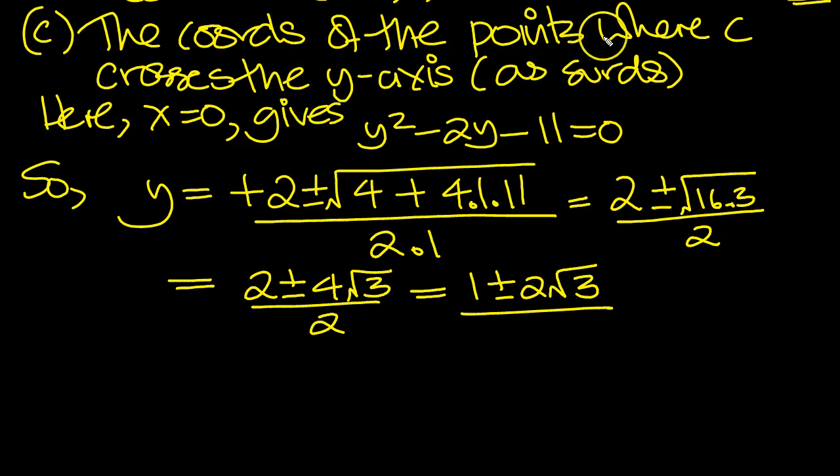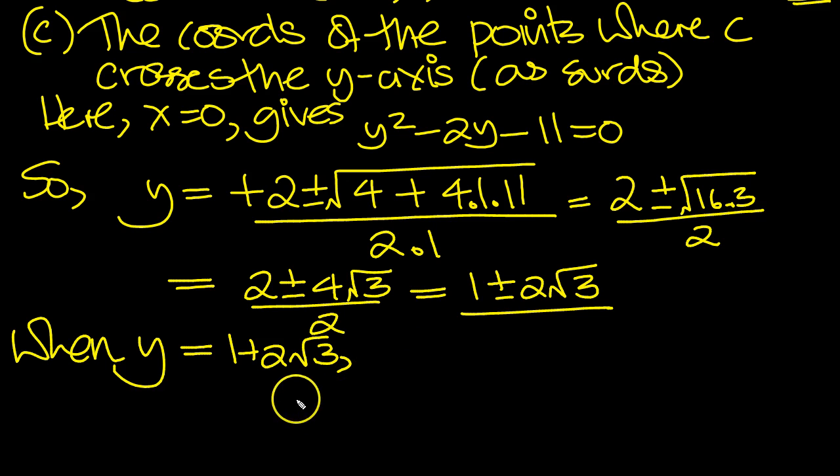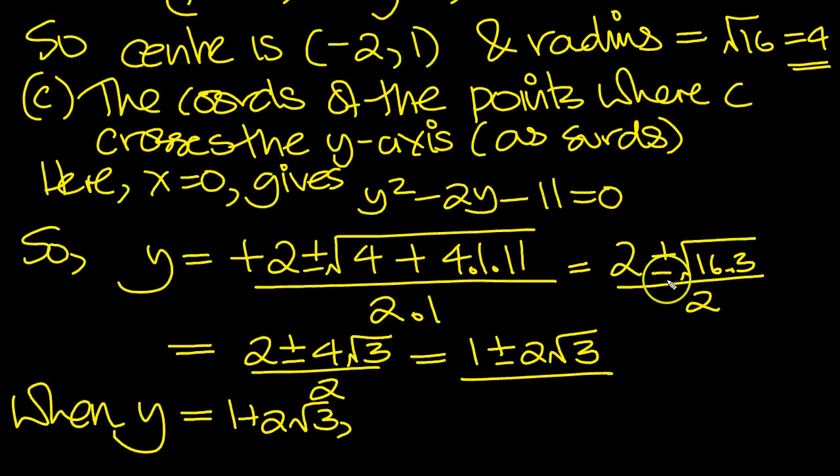So the coordinates of the points where c crosses the y-axis as simplified surds, these are the y values. So when y is equal to 1 plus 2 root 3, x equals, well this will be 0 and we'll get the x coordinate. x is 0.